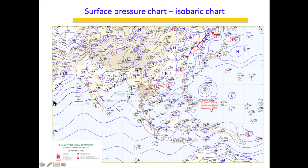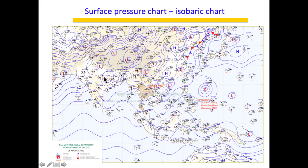Surface pressure charts, also called isobaric charts, connect lines of equal pressure values — these lines are called isobars. Along each isobar, the pressure is the same. A 'D' on the chart marks a depression, meaning the system has intensified. If a low pressure exists at a location, there will be updraft or convergence at the surface and cloudy weather around that area.